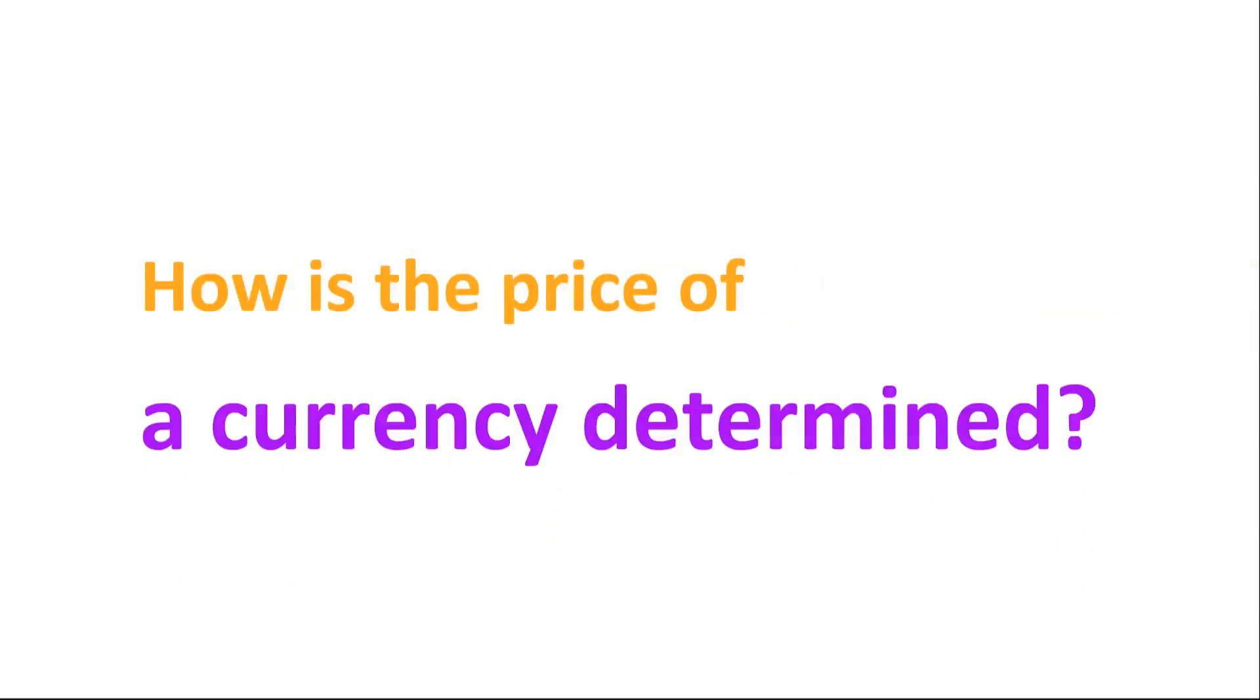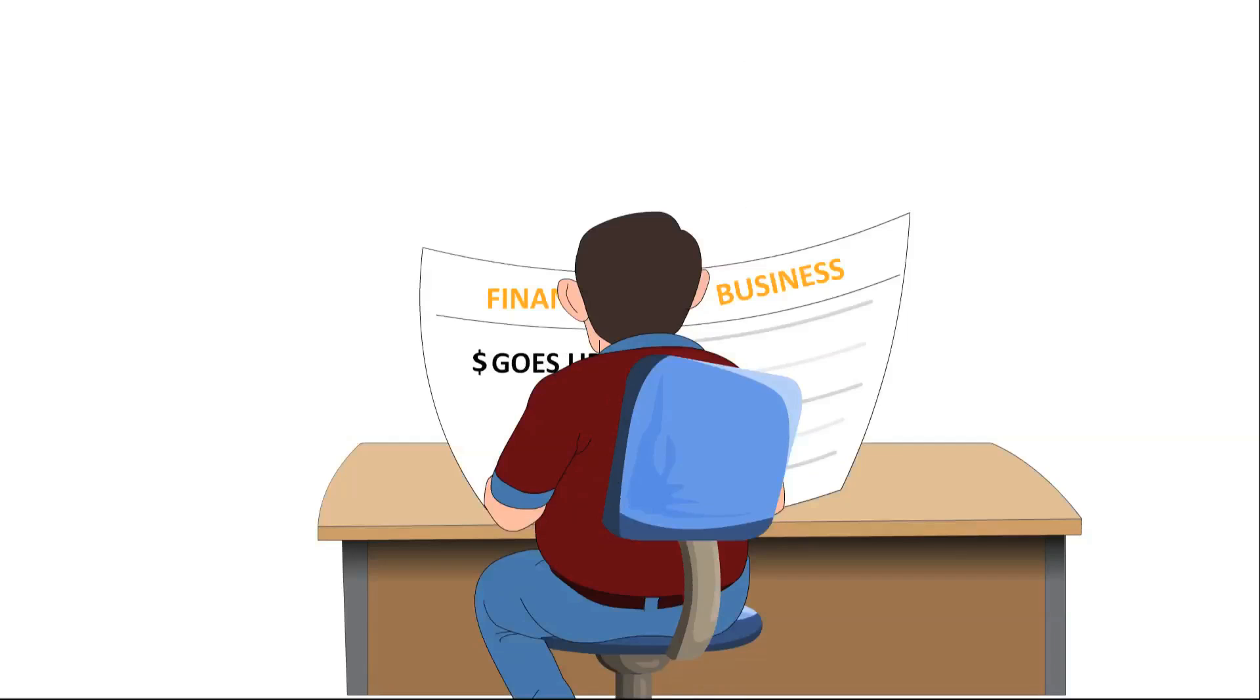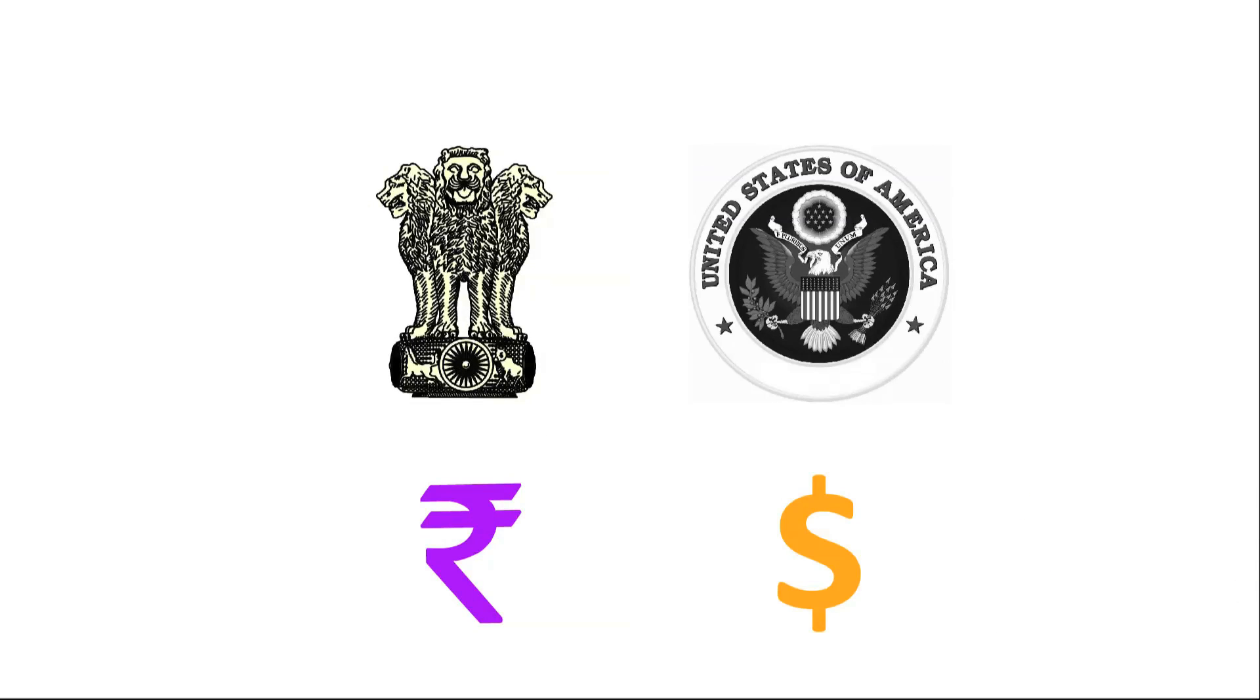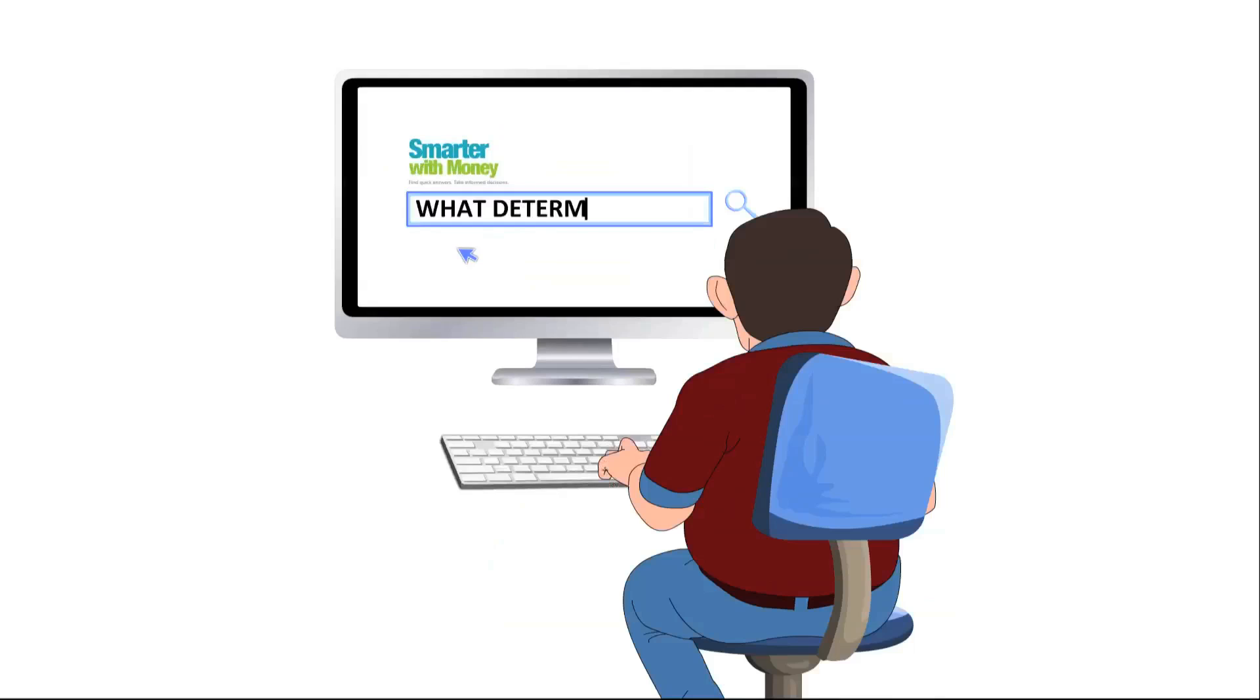How is the price of a currency determined? Mudra Pandit has been reading newspapers and notices that the price of the US dollar has changed from rupees 50 to rupees 60 in over a month. This has puzzled him. He knows that currency prices are not fixed by the Indian or the US government. So he starts exploring this question in detail.